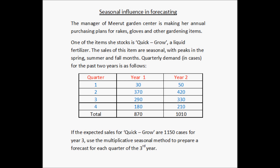The quarterly demand in cases for the past two years has been provided. In Year 1, the first quarter demand for Quick Grow liquid fertilizer was 30 cases, second quarter was 370 cases, third quarter 290 cases, and fourth quarter 180 cases. For Year 2, first quarter demand was 50 cases, second quarter was 420 cases, third quarter was 330 cases, and fourth quarter was 210 cases. The total demand for Year 1 was 870 cases, whereas for Year 2 it was 1,010 cases.